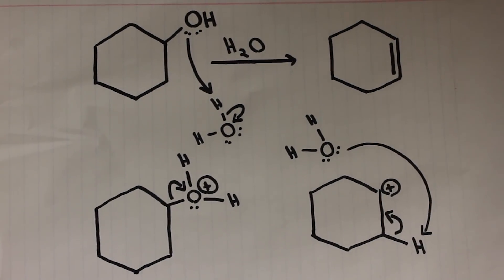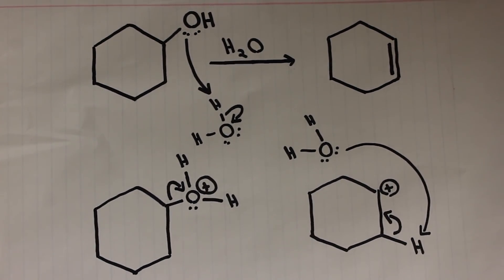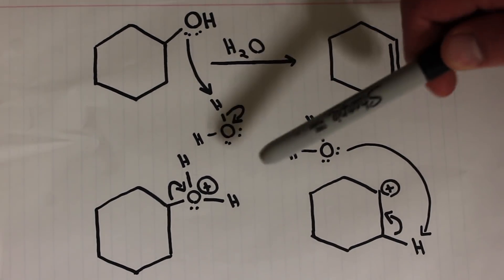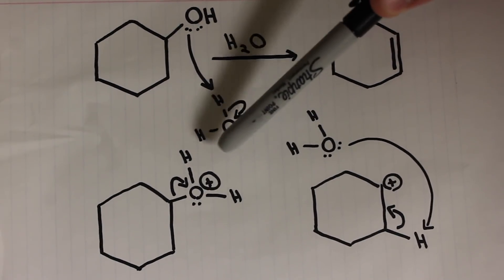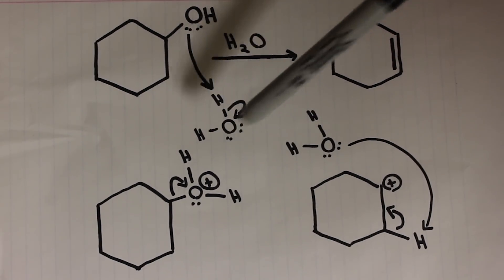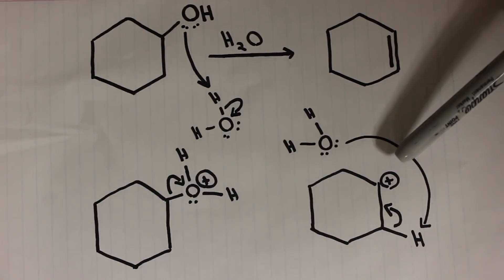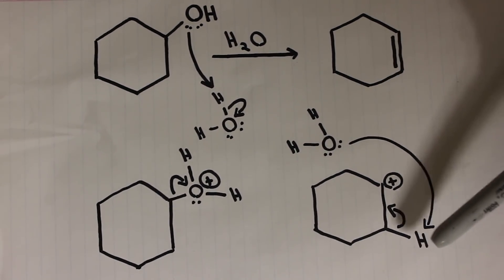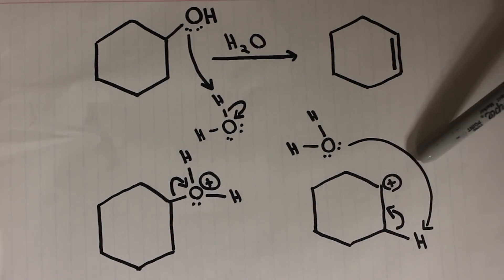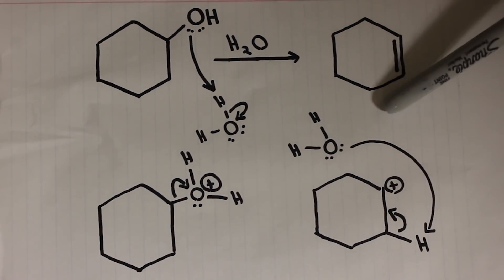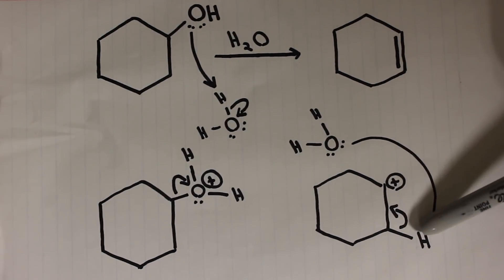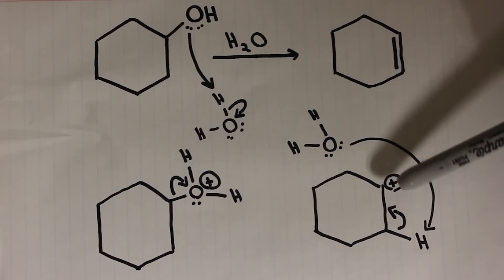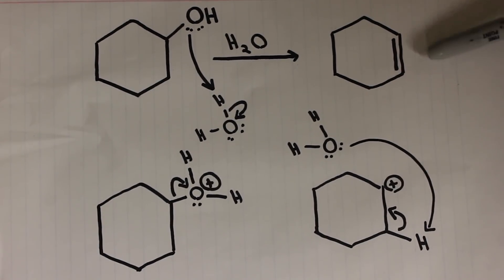The first step in this E1 mechanism is a proton transfer, where the hydroxide ion — a bad leaving group — is turned into water, which is a good leaving group. Then the good leaving group of water leaves the molecule, creating a carbocation. Then another molecule of water takes this hydrogen on the beta carbon away from the beta carbon in another proton transfer step. The electrons that were on this hydrogen then form a double bond between the alpha carbon and the beta carbon. And that gives you our final product.